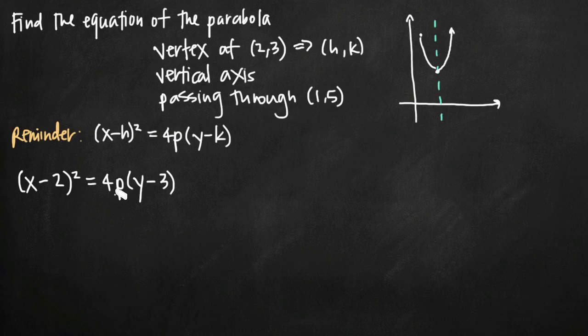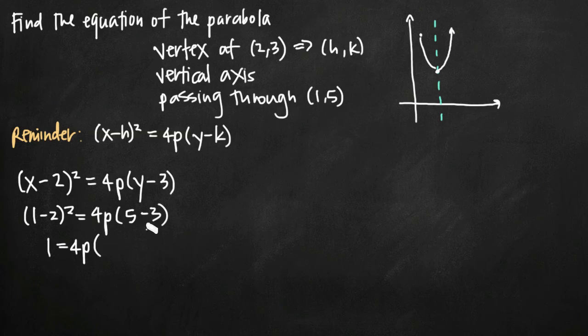From here now, all we need to do is solve for p, and the way that we'll do that is by plugging in the point that we've been given, (1,5), to our equation. So we'll plug in 1 for x, we'll get (1-2)² = 4p. We'll plug in 5 for y, and we'll get 5-3. When we simplify this, here we'll get negative 1 squared, which is a positive 1. We'll be 4p times 5 minus 3, which is 2. We get 1 = 8p, or p = 1/8. So now we can plug p back into this equation here.